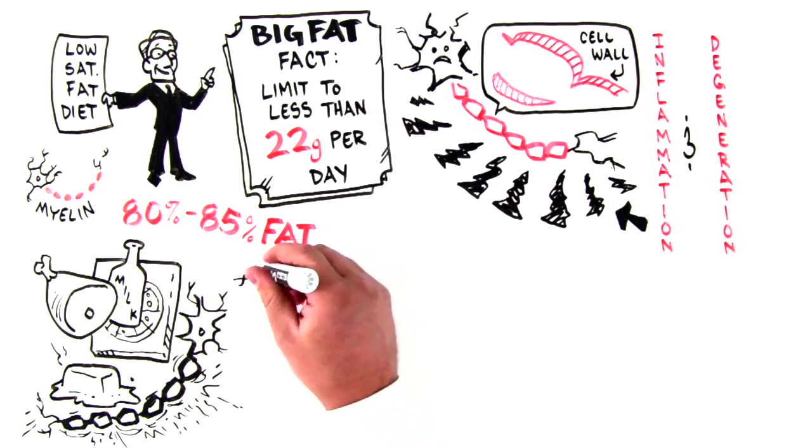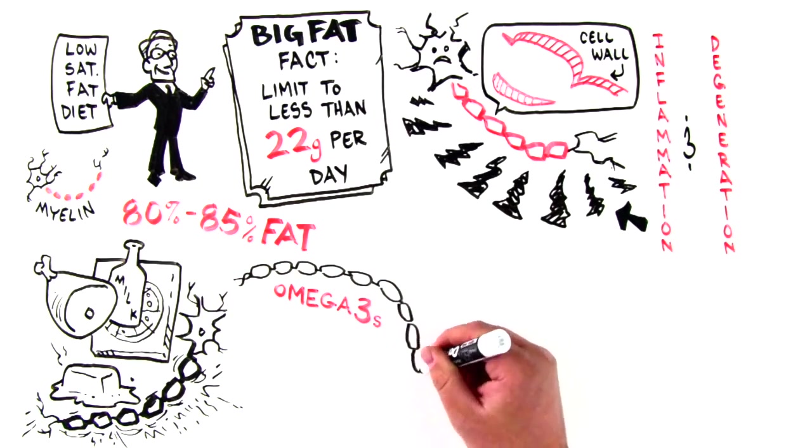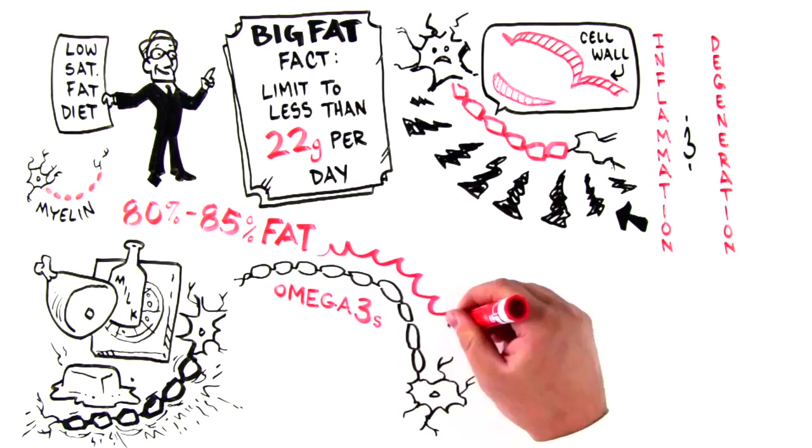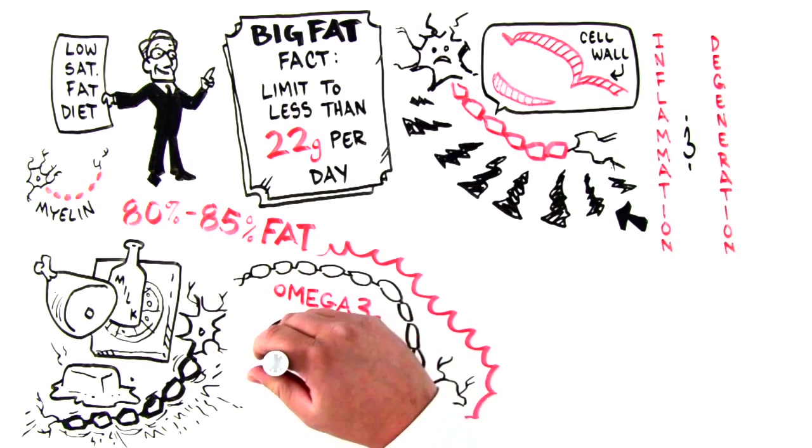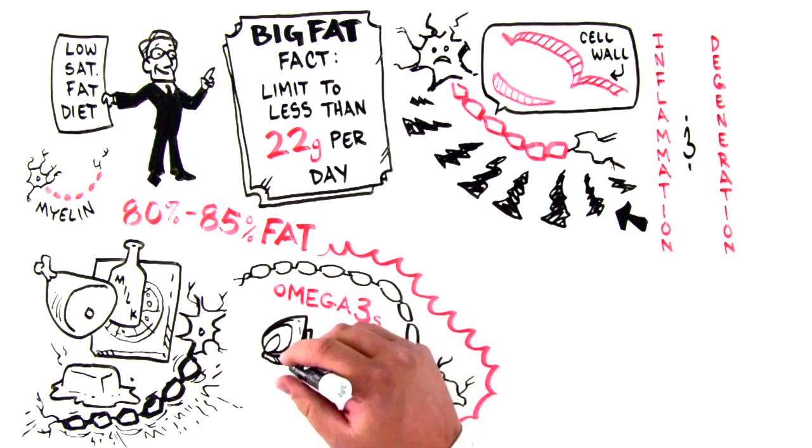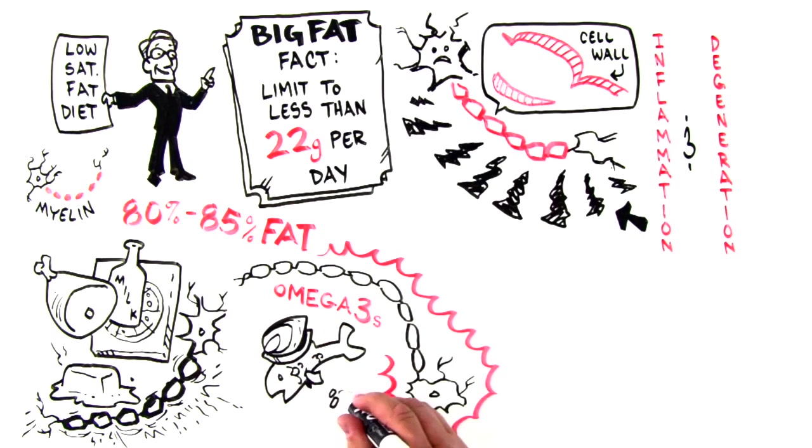Polyunsaturated fats like omega-3s are anti-inflammatory and resistant to degeneration. So we recommend focusing on foods high in omega-3s, like seafood, fish, flaxseed, etc., and avoiding saturated fat like meat, dairy, and fried or processed foods.